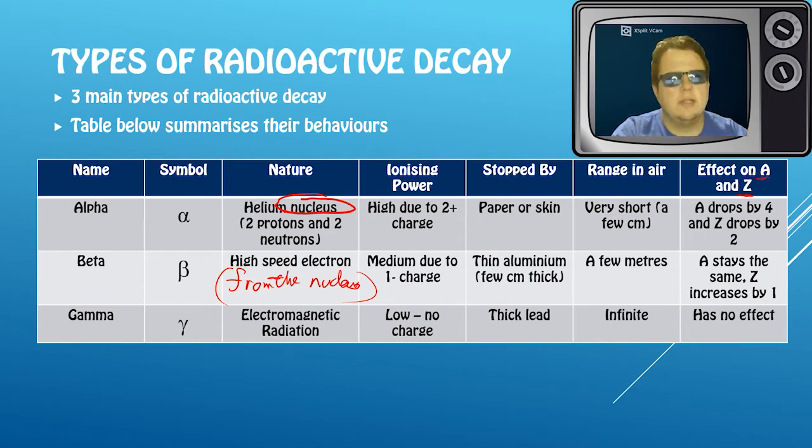And you need to learn those numbers: that alpha drops A by four and Z by two. Beta - A stays the same, Z increases by one - and we'll see why that is in a minute. Okay, so I'm just going to leave this up there for probably another sort of 10 seconds so people have a look at this again. If you're watching this on the video, probably a good idea to pause it here to get this information down.